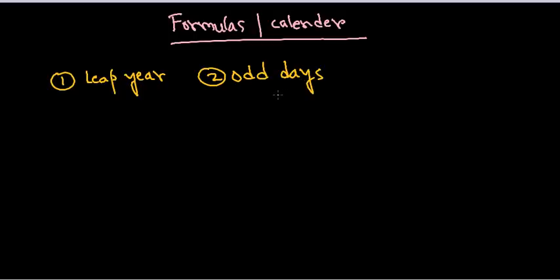So let's talk about leap year. A year is said to be a leap year if it is divisible by 4. The normal situation: if you take a year, let's say 1948, you take the last two digits and check if they are divisible by 4 with no remainder. In this case 48 is divisible by 4 with nothing remaining, so this is a leap year.